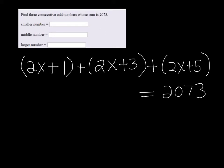So if we combine like terms, we have a 2x, a 2x, and a 2x, that's 6x, and a 1 and a 3 and a 5, that's plus 9. That's going to equal 2073.